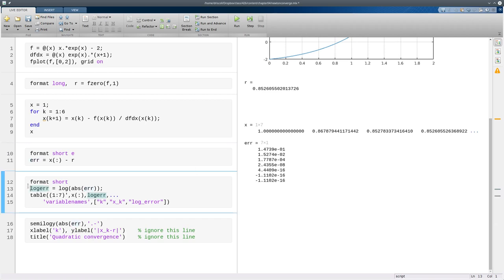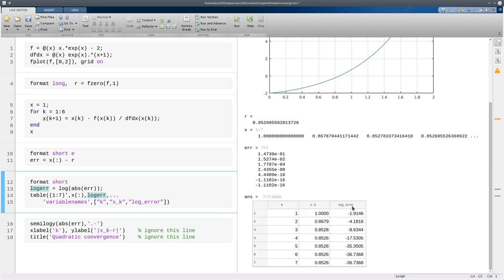It's a little bit more precise if you look at the logs of the errors, so I'll make a table of those. So when you look at the logs, they are very nearly doubling each time, 4.2, 8.6, 17.5, and then you hit machine precision and you can't go any farther.